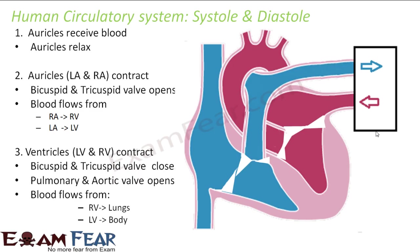Let us now try to understand the functioning of the human heart. We have understood the circulatory system inside the human body as a whole — how blood flows inside a human body. But now what we are trying to understand is: what is the cause of the beating of the heart? Why does the heart beat? What is it that happens inside the heart which makes it beat?